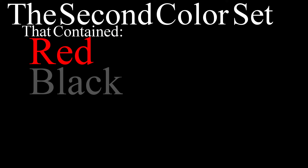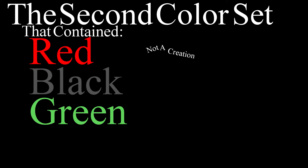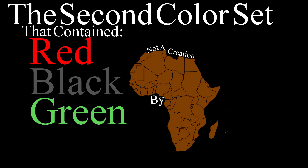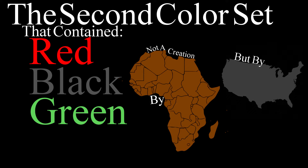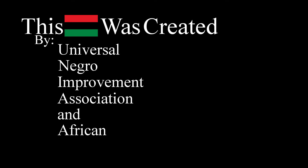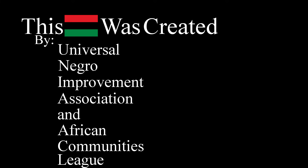The second color set that contained the colors red, black, and green were not a creation made by Africans, but rather by African Americans in the United States. This flag was created by the Universal Negro Improvement Association and African Communities League, but we will just call them UNIA to make things easier.